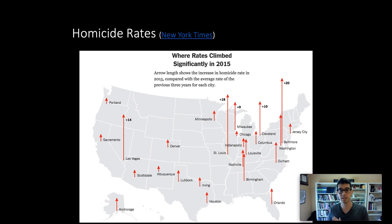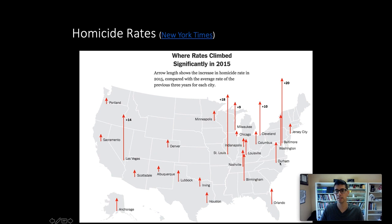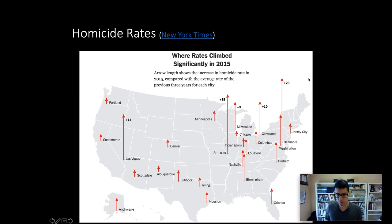While the visualization communicates how much crime differs in its increase from city to city, there's a lot of information it doesn't convey. We're only seeing cities where the homicide rate increased — leaving out cities where it hasn't — so it looks like homicide is rising in a tidal wave across the entire US. We also lack historical context for whether an increase of, say, plus 20 is truly as astronomical as it appears.